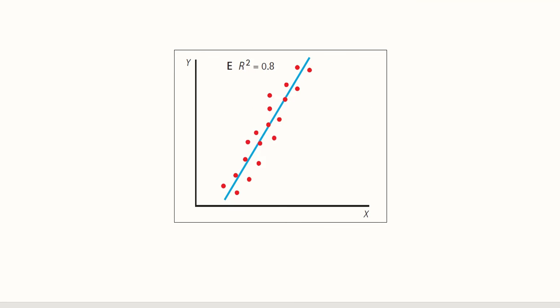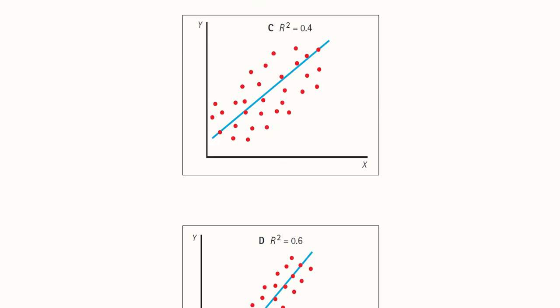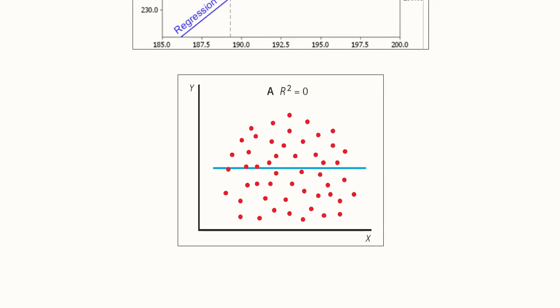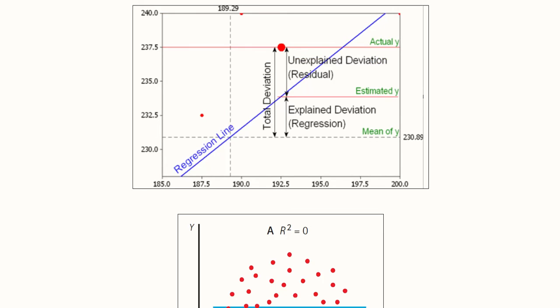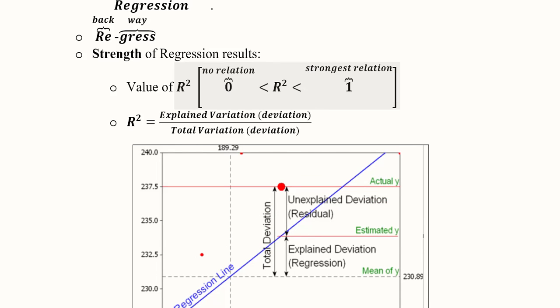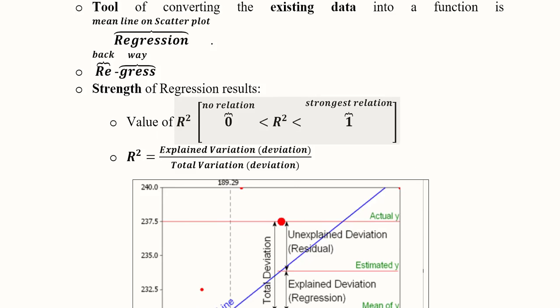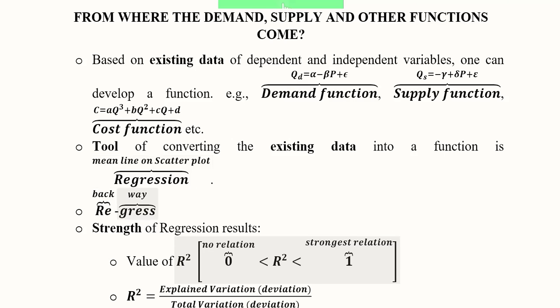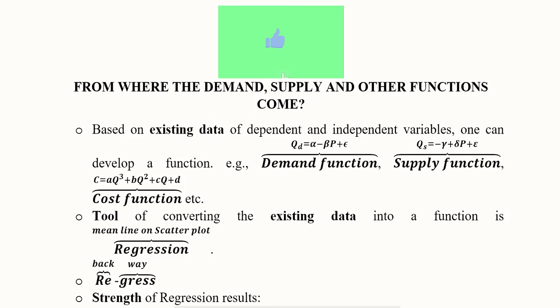In summary, using the tool of regression we can develop demand, supply, and other economic functions from existing data. Regression allows us to identify strong or weak relationships, with R-square as a key indicator. These are the various economic functions — demand, supply, and cost — that we can develop using regression and software data.